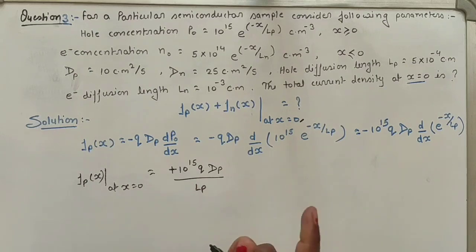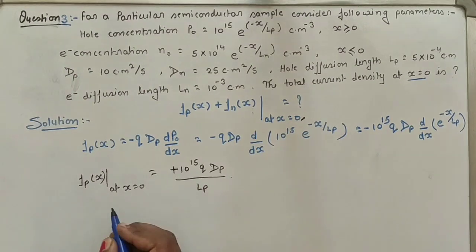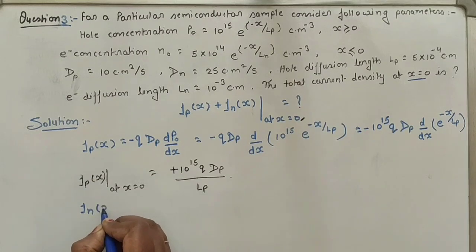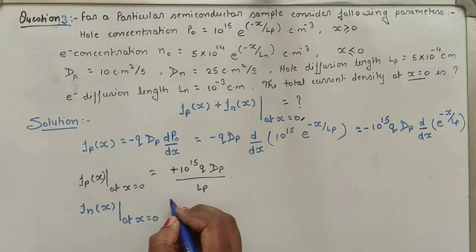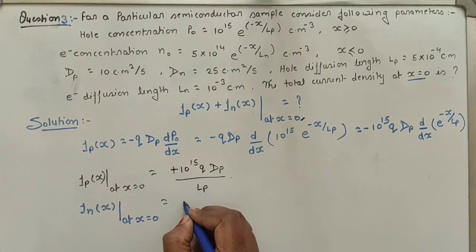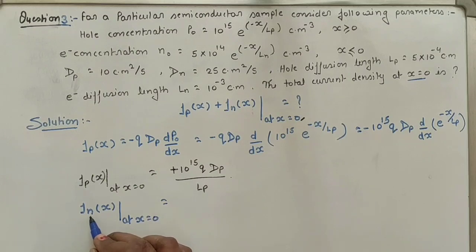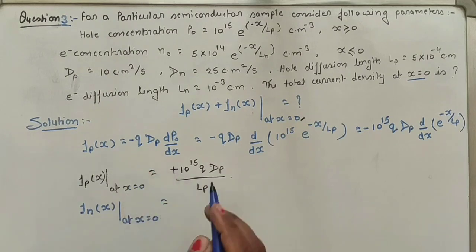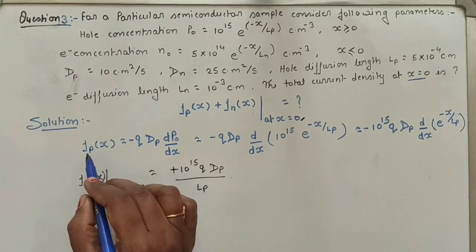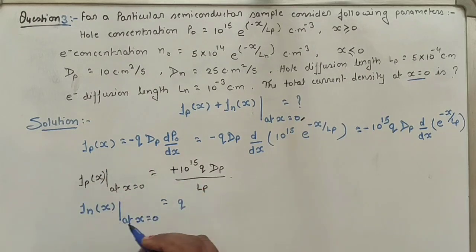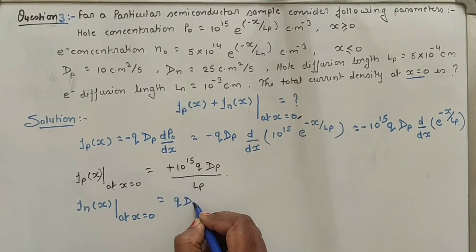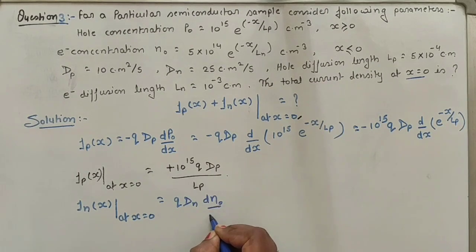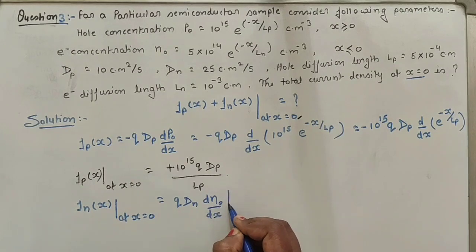Now let us find JN(x) at x equal to 0. For electron diffusion current density, note that there is no minus sign in the formula — unlike the hole current density formula which has a minus sign. The electron diffusion current density formula is: JN(x) = q · DN · dn₀/dx, evaluated at x = 0.